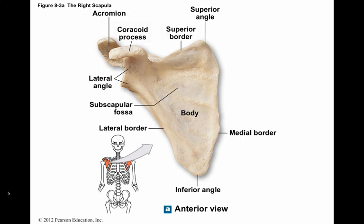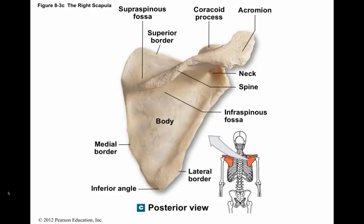Ligaments of the shoulder joint are attached to both of these projections. On the posterior surface, the scapular spine is a ridge that crosses the posterior surface of the body. The scapular spine divides the posterior surface of the scapular body into two regions: the supraspinous fossa, above the spine, and the infraspinous fossa, beneath the spine.